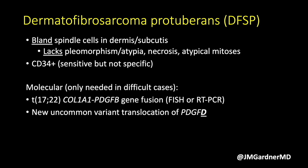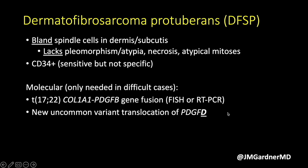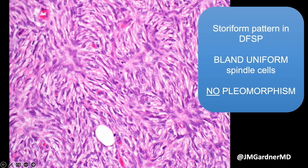The most common gene fusion is COL1A1::PDGFB. A few years ago it was discovered that a subset of DFSPs negative for that fusion actually have a translocation with a variant partner, PDGFD — D as in delta — which can be fused with a couple of different partner genes. So if you fish for COL1A1-PDGFB and it's negative, if you're able to, I like to reflexively fish for PDGFD.